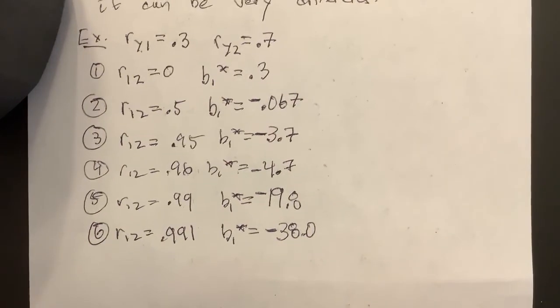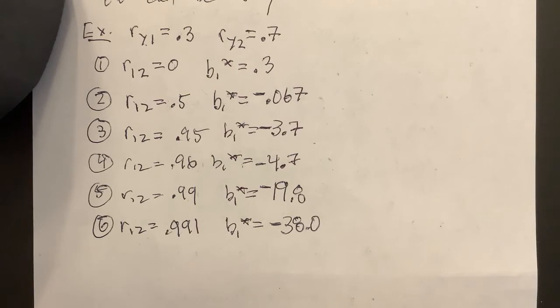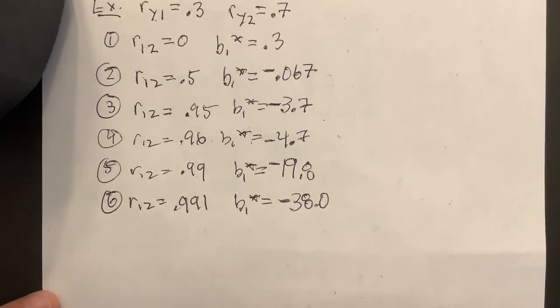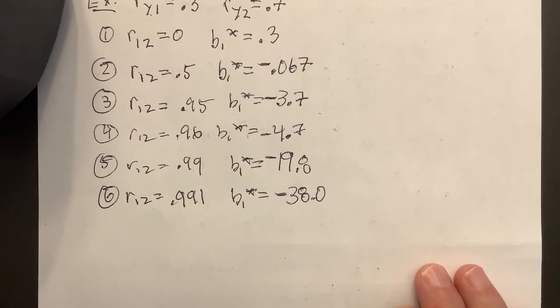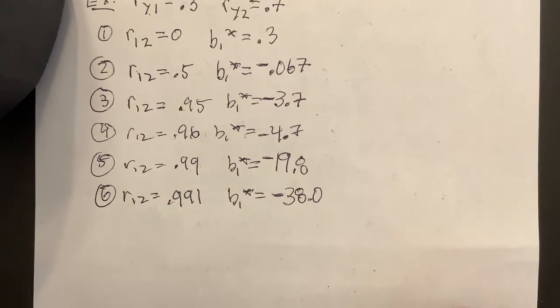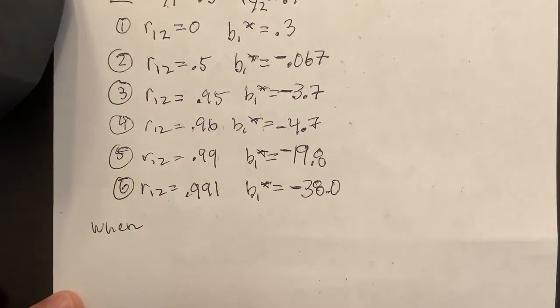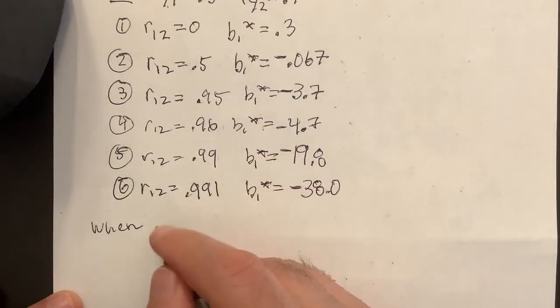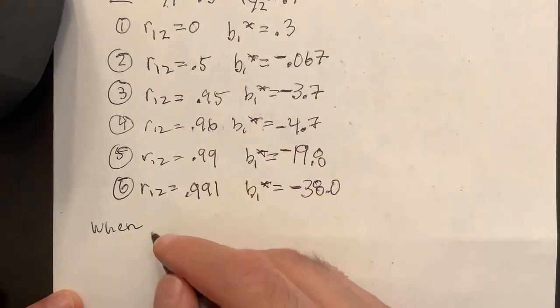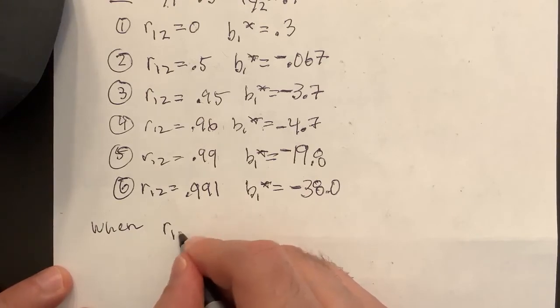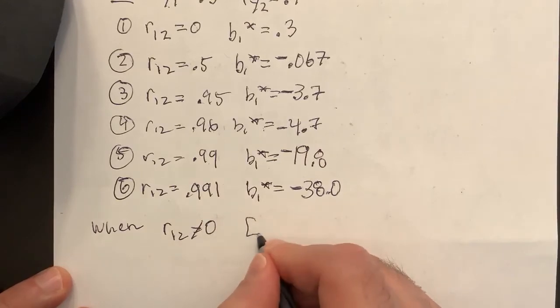So what this tells you is when your predictors are correlated, you don't have this independence of the coefficients. So 1 doesn't hold. So clearly, when R12 not equal to 0, clearly 1 doesn't hold.